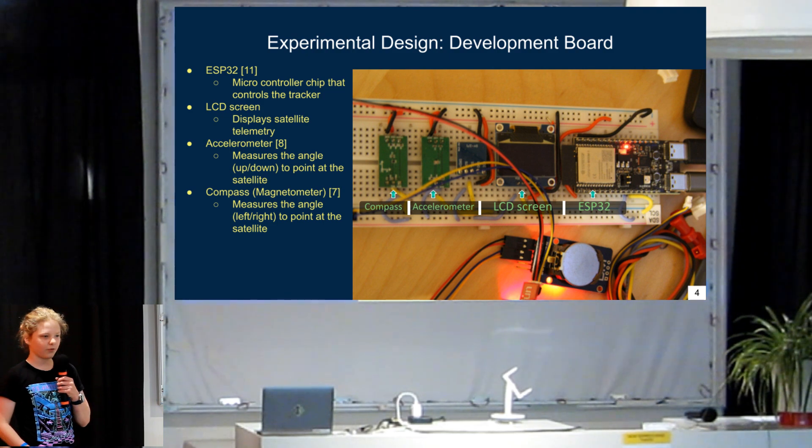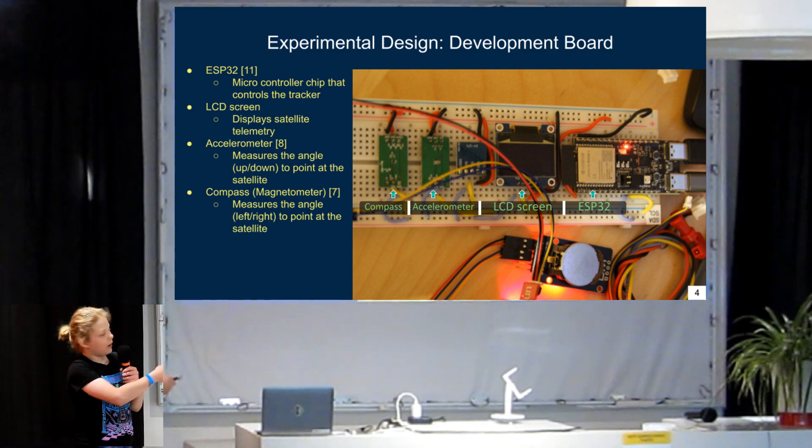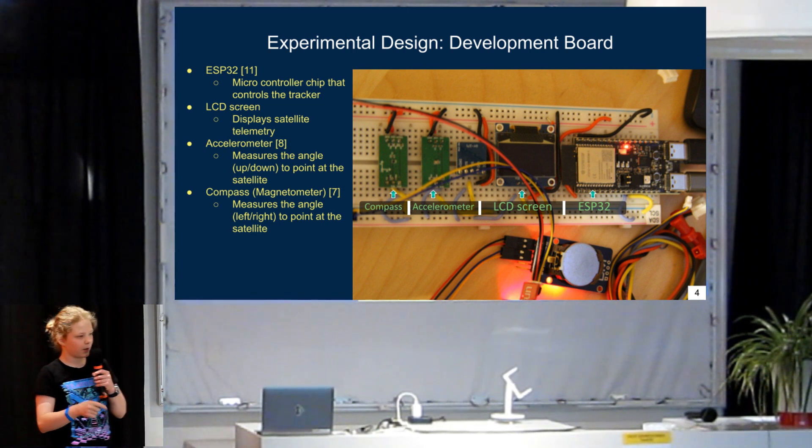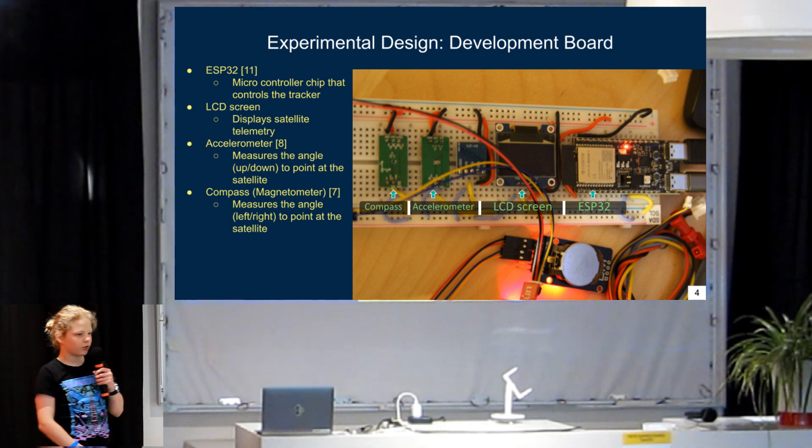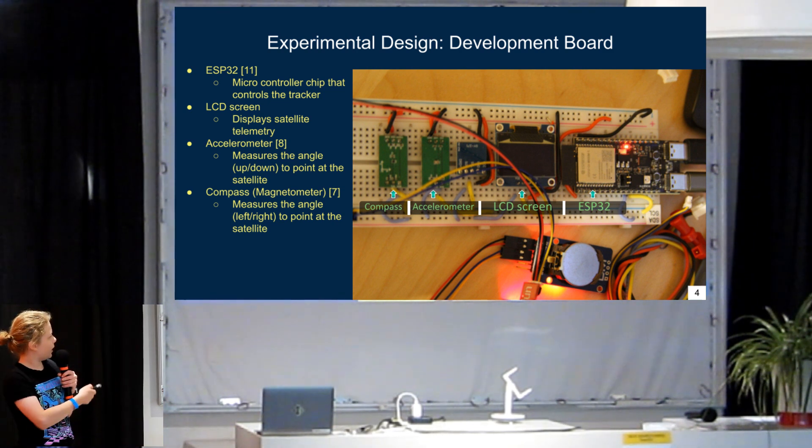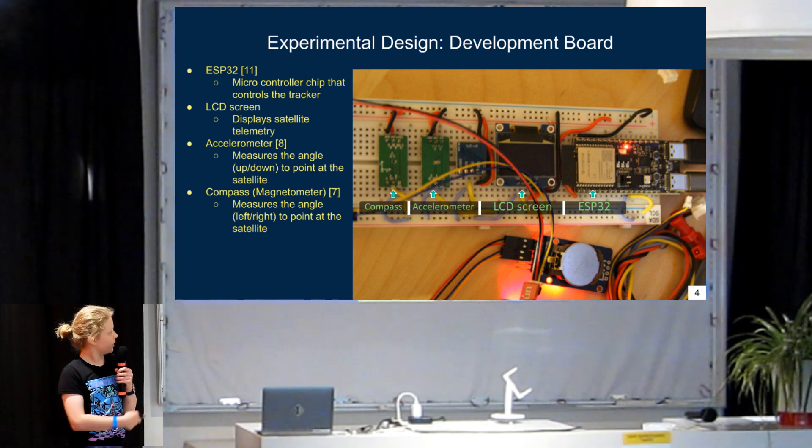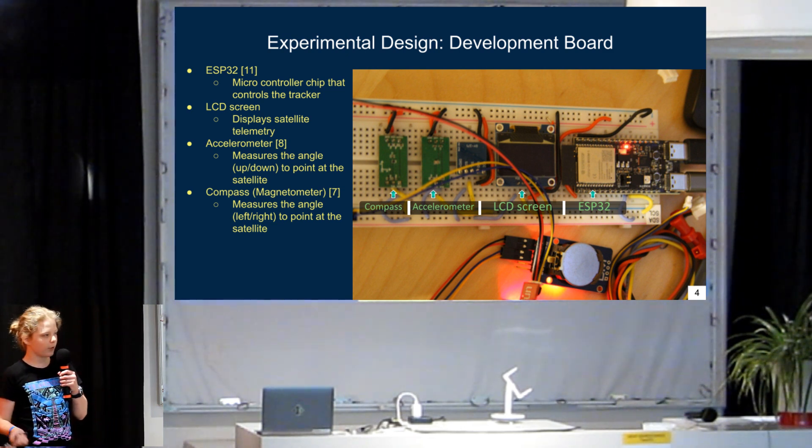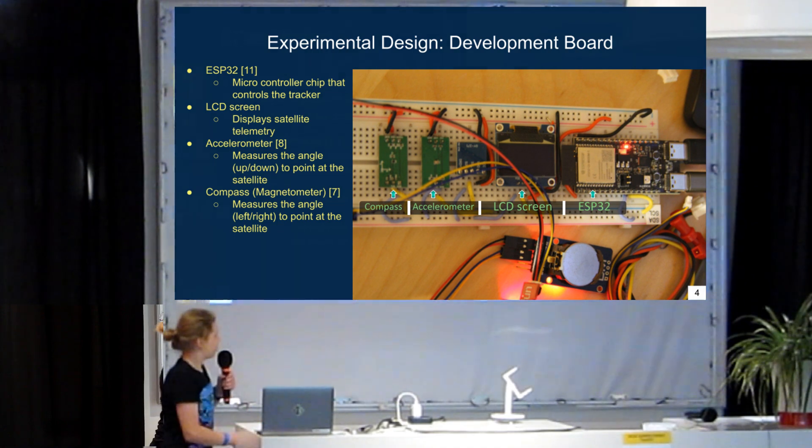So, now on the programming side of things. And so, I put together on a little breadboard, a magnetometer, which is basically a compass for measuring theta's position. I have an accelerometer for measuring phi's position. I have an LCD screen for selecting satellites and displaying telemetry. And I have my ESP32 microcontroller, which controls it all. So, this is like the step before I put it onto a circuit board.